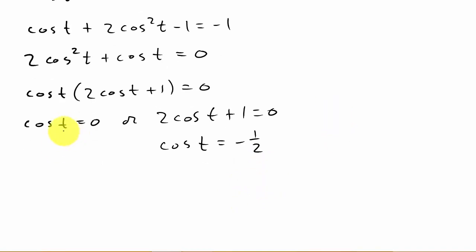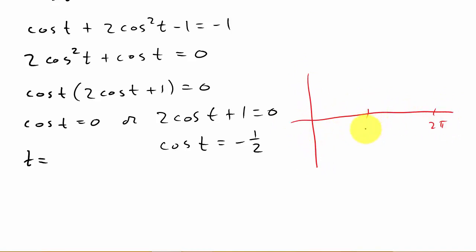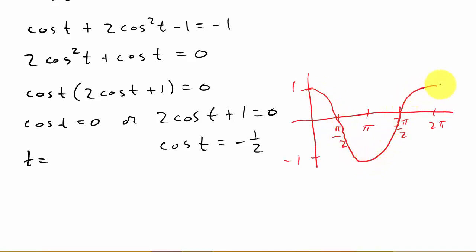From cosine t = 0: remember the graph of cosine from 0 to 2π — cosine equals 0 at π/2 and at 3π/2. So those give us t = π/2 and t = 3π/2.